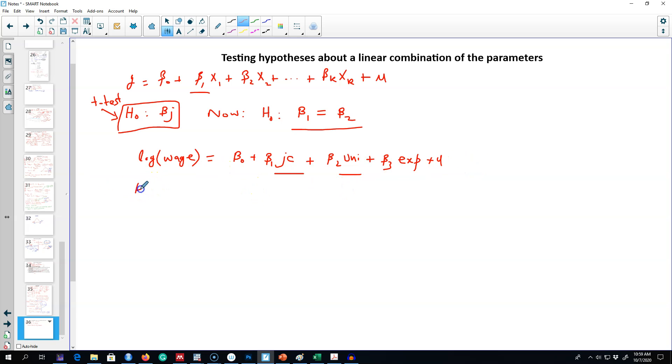In this case, we are interested in testing the hypothesis whether beta_1, the return to junior college education, is equal to the return to university education beta_2. That is, one year of extra education at a junior college is worth the same as one year of extra education at the university.